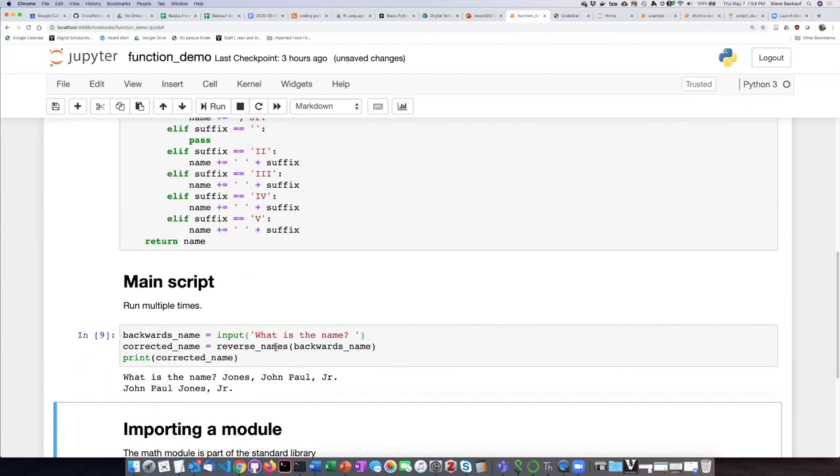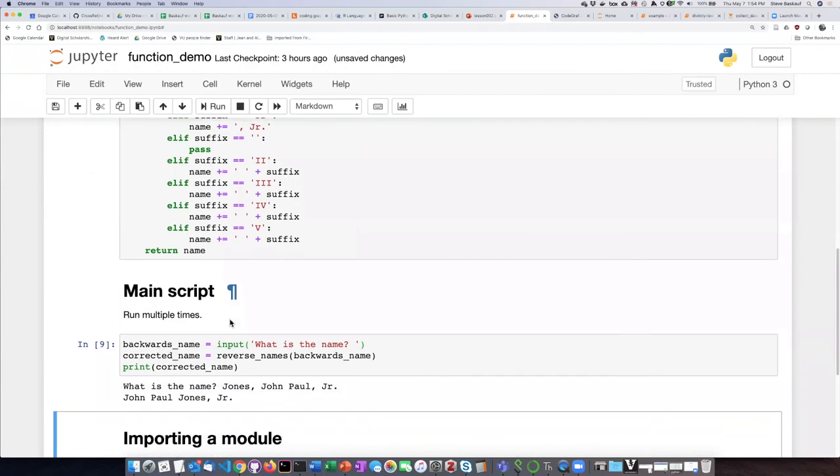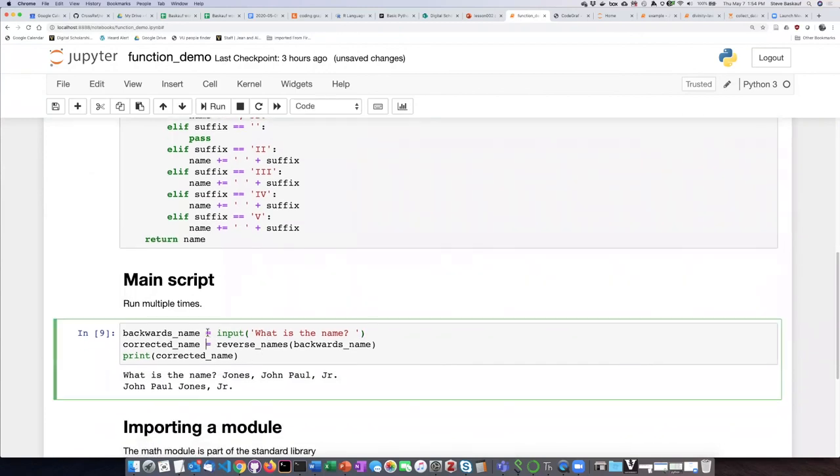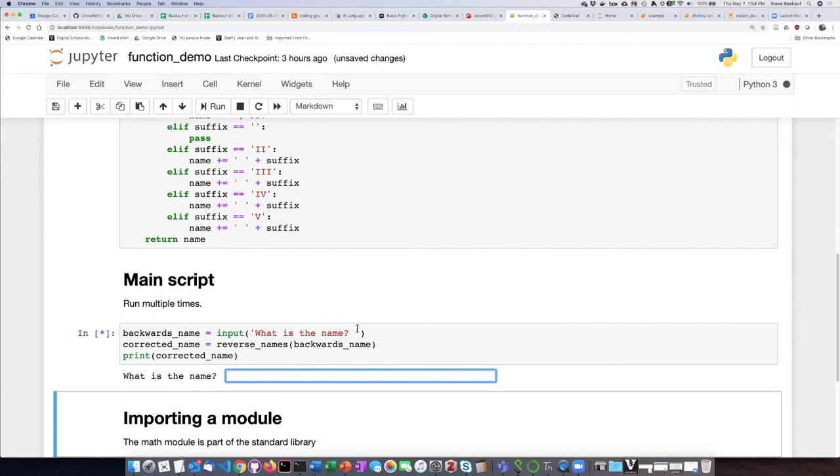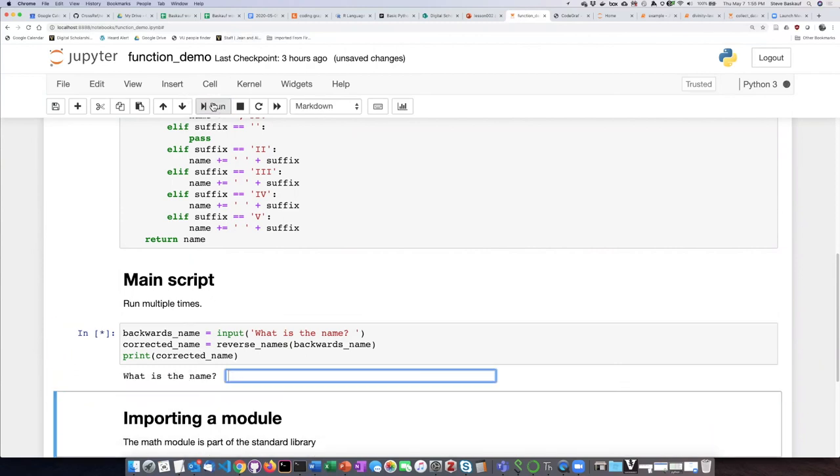Now, if I want to use the function again, I don't have to go back up here and rerun the code that defines the function because my environment already knows what that function is. All I have to do is just run that code again. Let's try Franklin Smith, the third. And this function also will handle names that are not reversed as long as they don't have any commas in them.